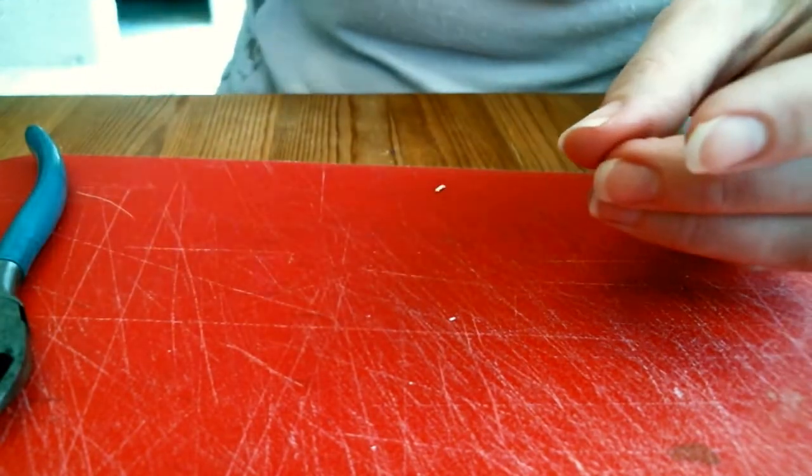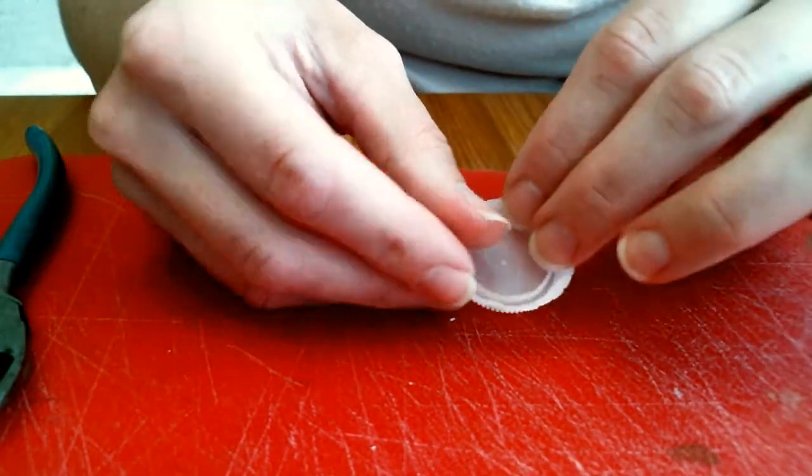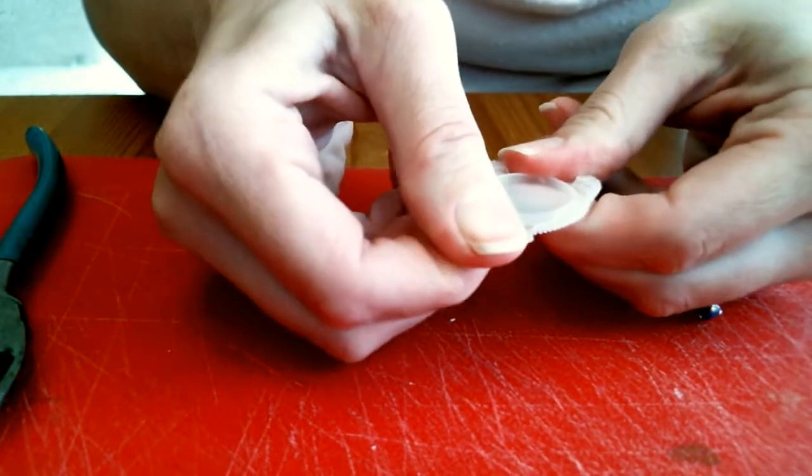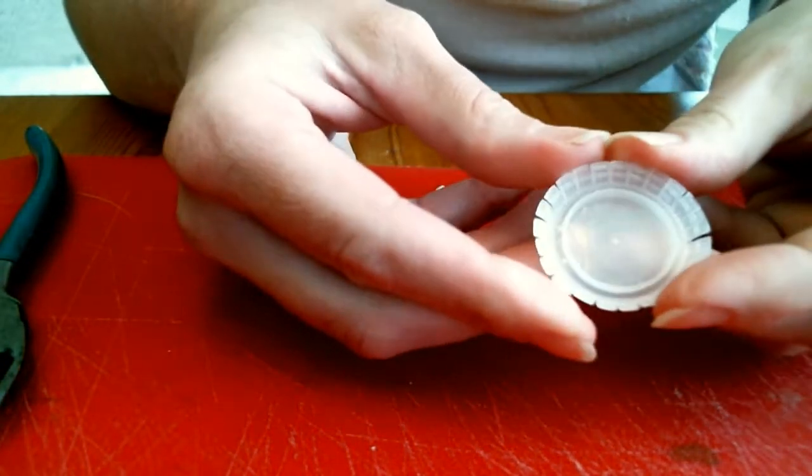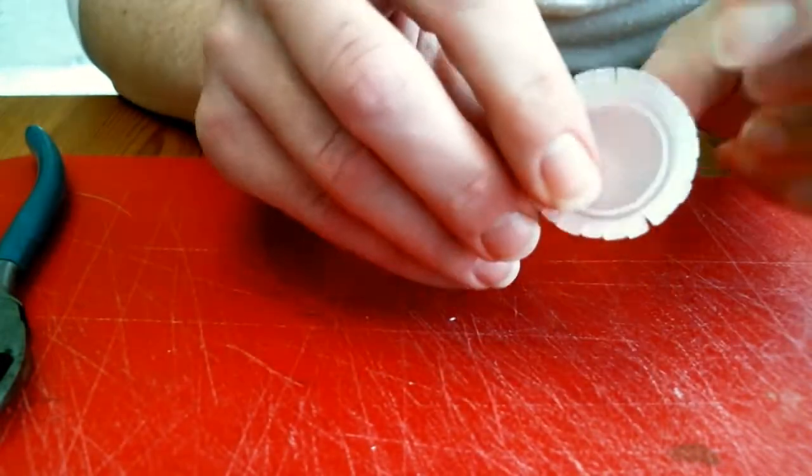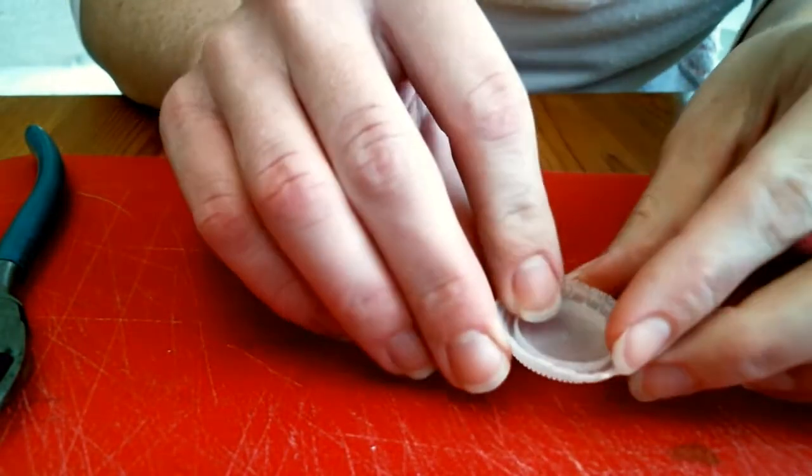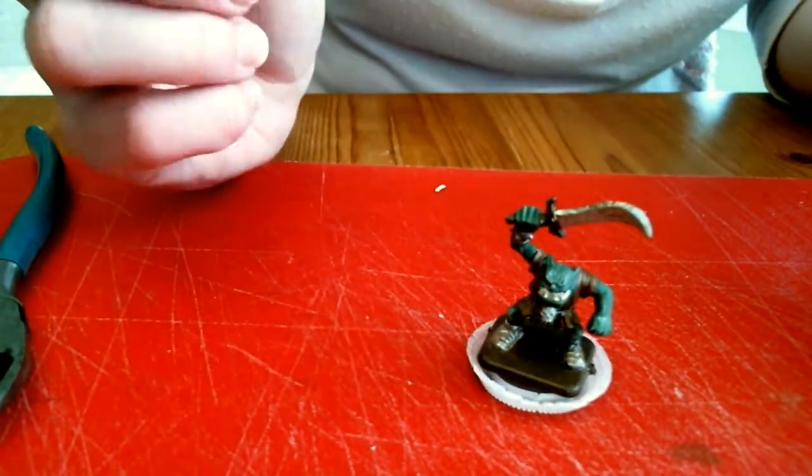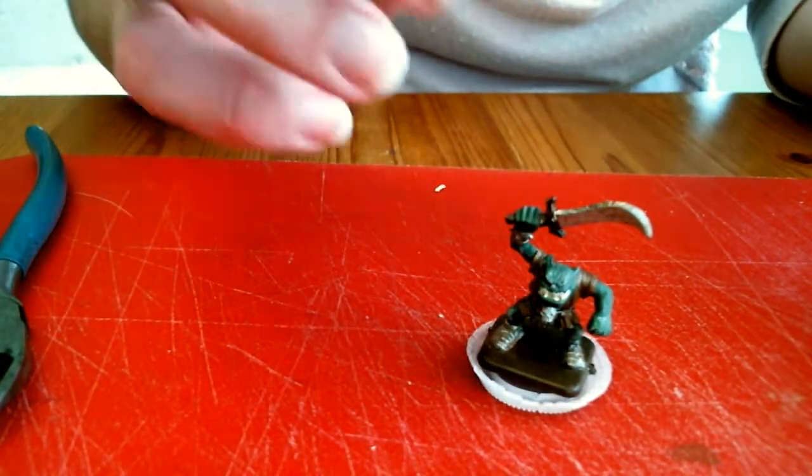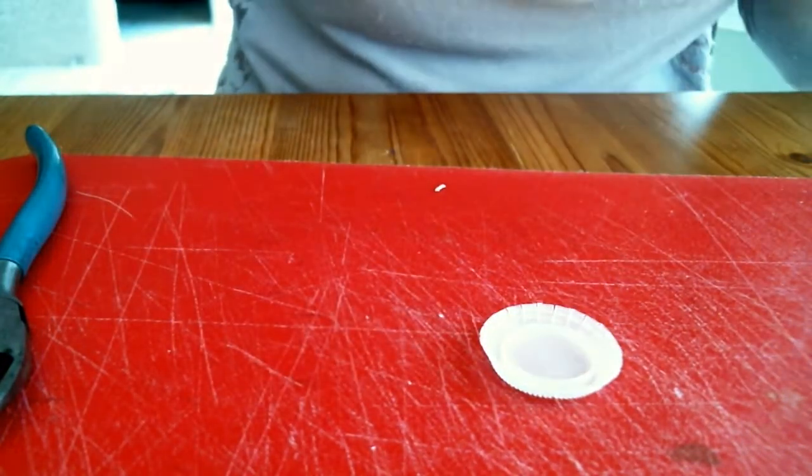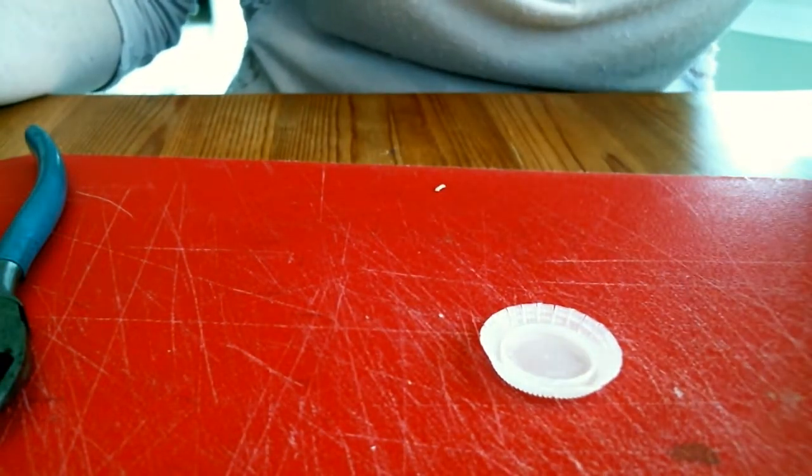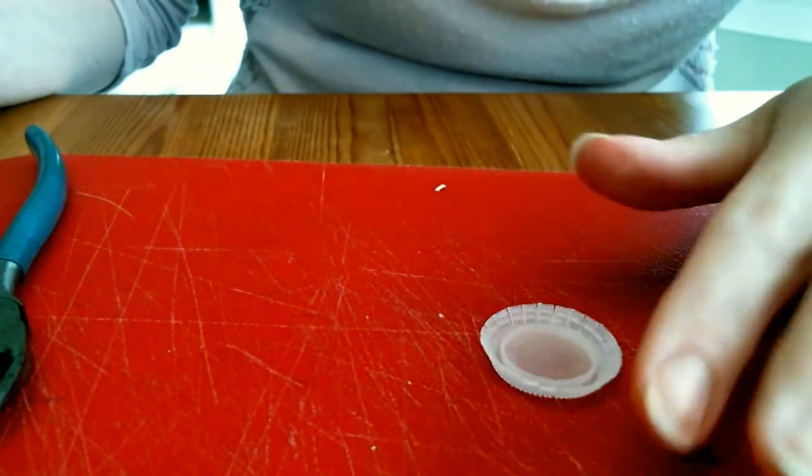And what happens is your bottle cap is going to flare out. And you can manipulate it with your thumbs to open it up, and you see you get this nice little flaring that happens. So then, if you want to leave it like this, you can, because your figures should fit in there, no problem. But what I do, just to kind of give it a better base, is I will take a quarter, just standard US quarter here.